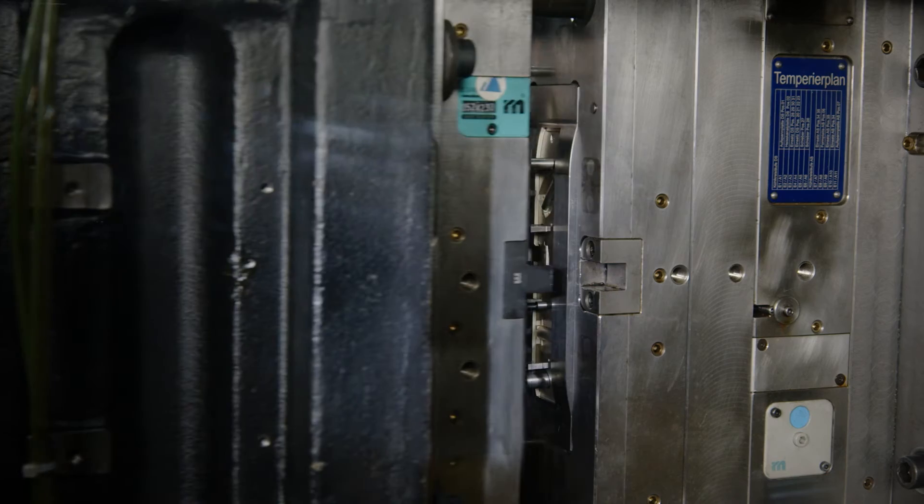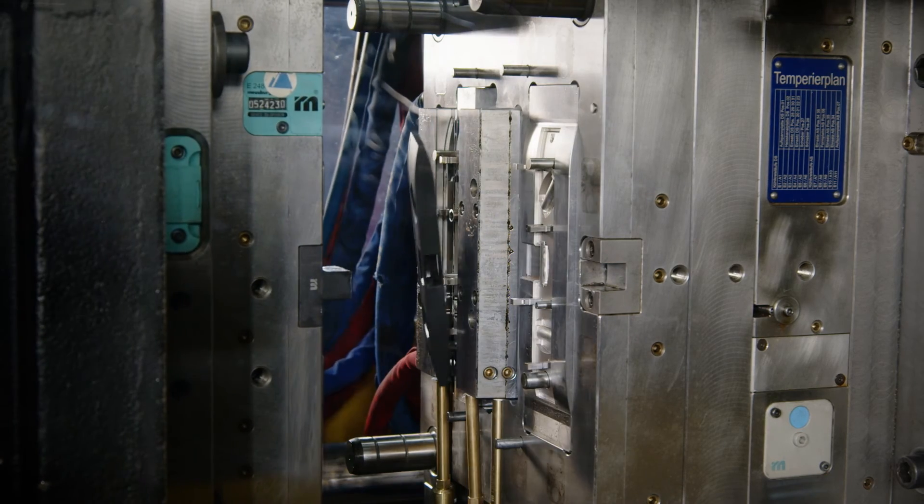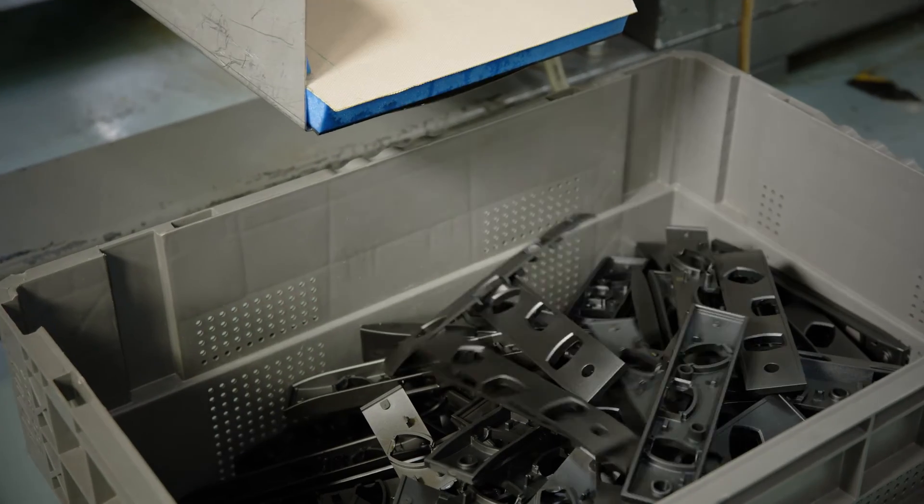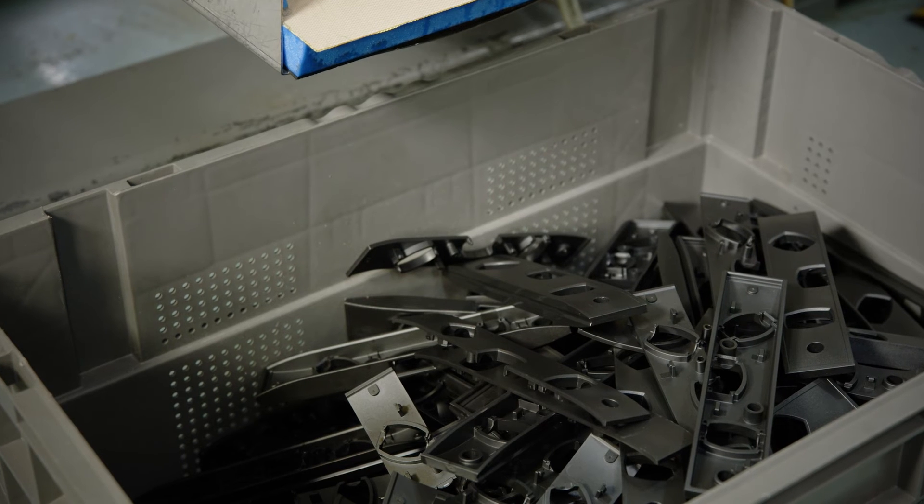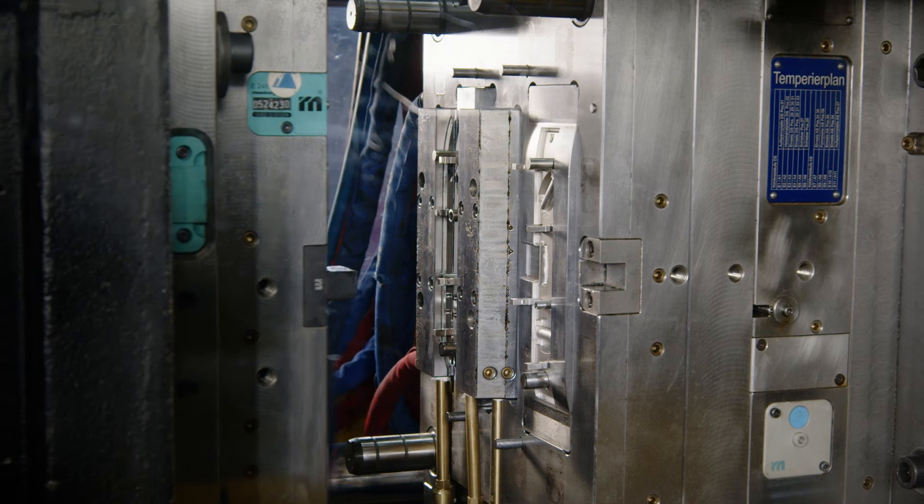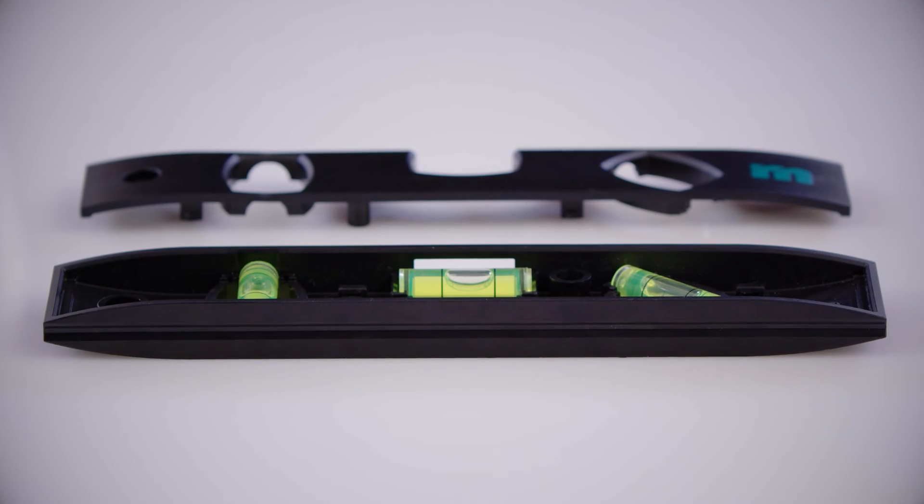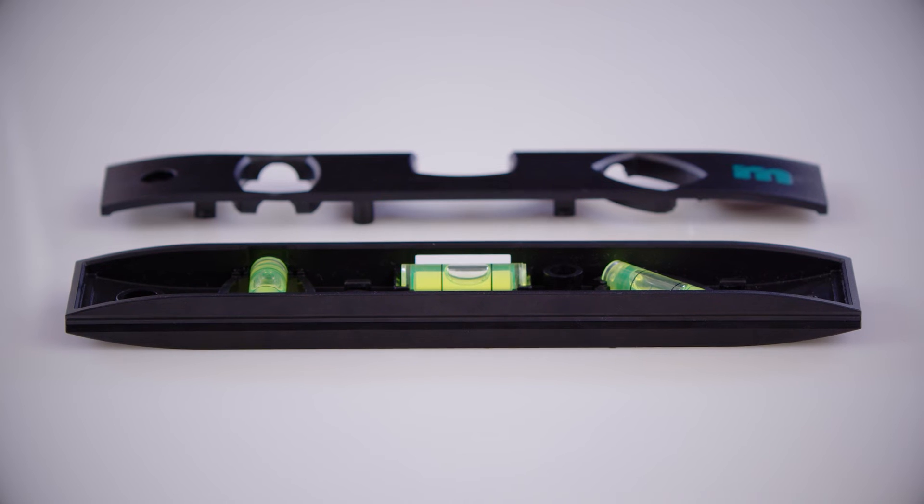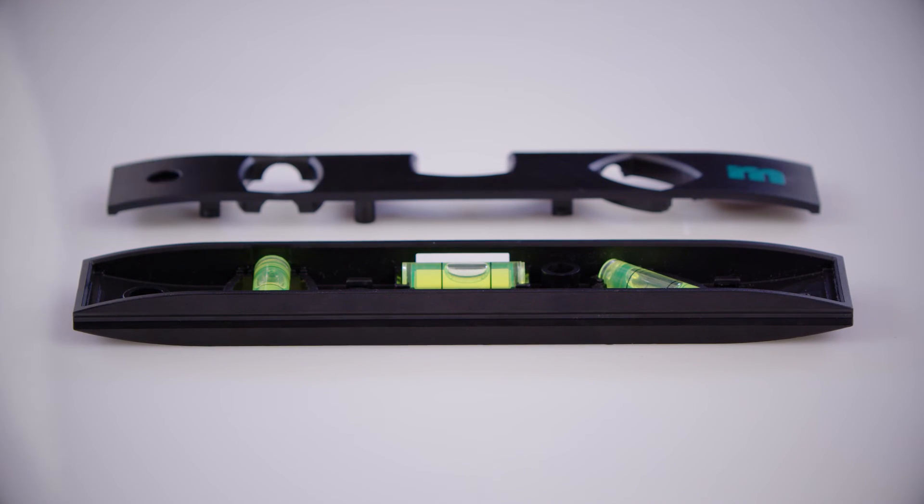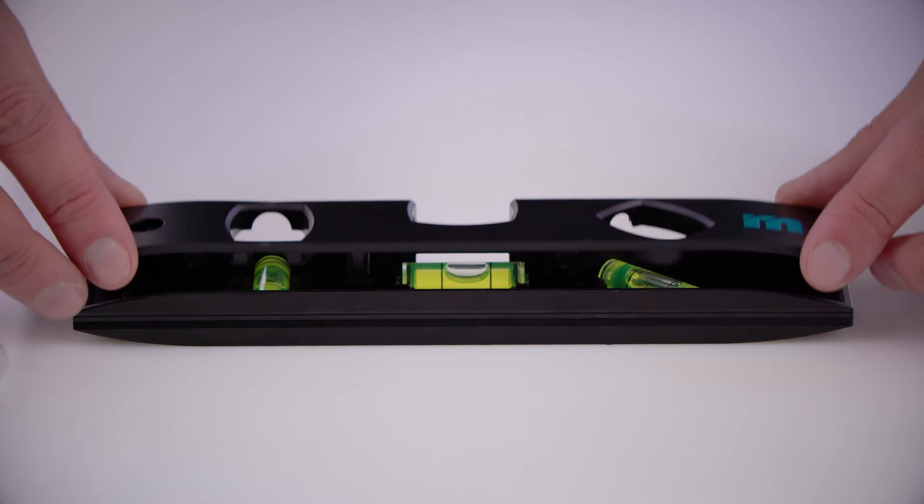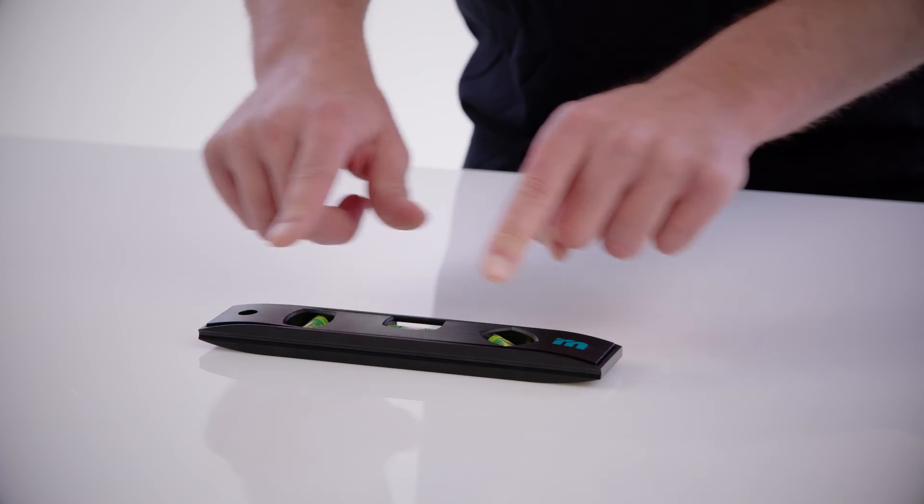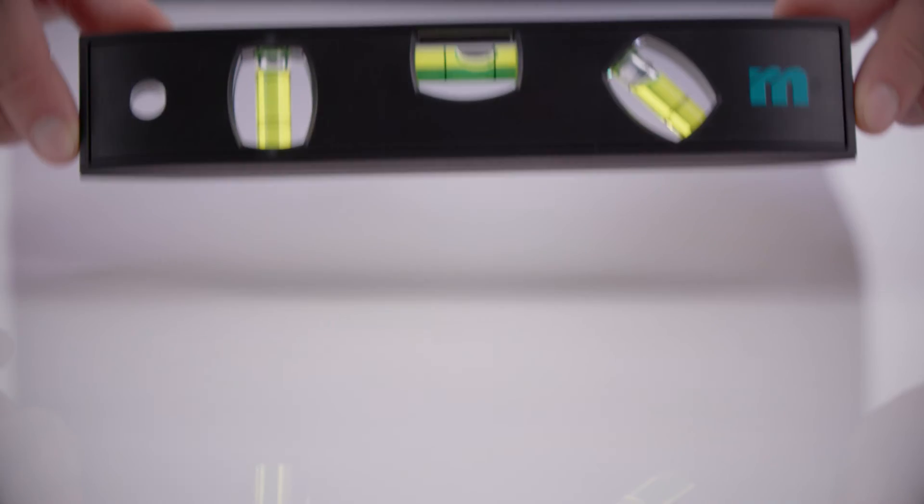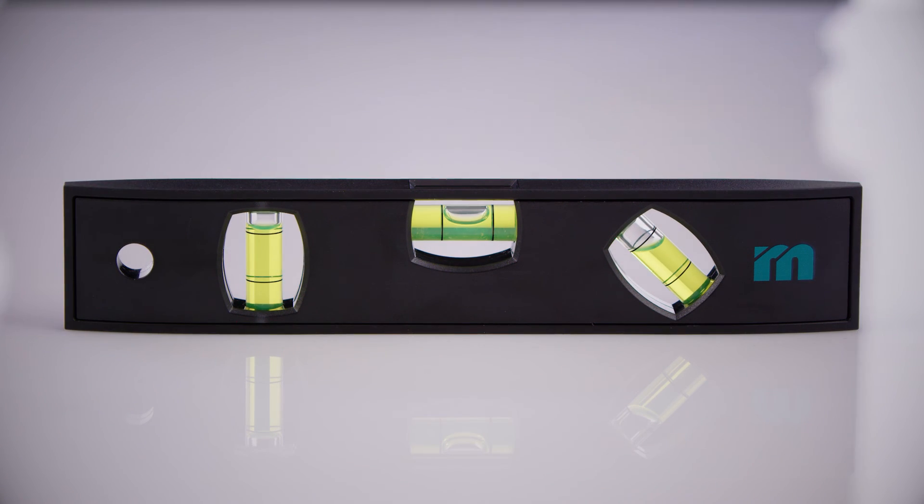Sufficient cooling ensures that the molded parts are not damaged during ejection. The wall thickness of the finished product determines the duration of the cooling phase in the mold. Finally, the components of the spirit level can be fully assembled.